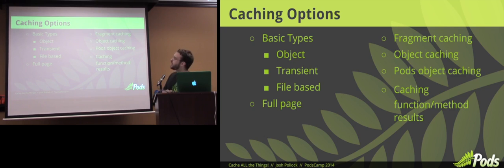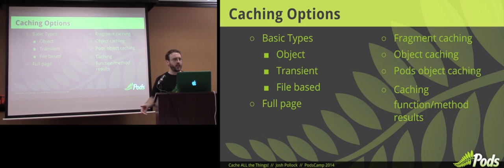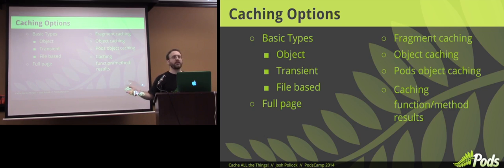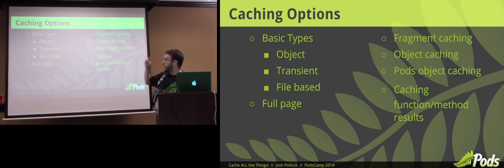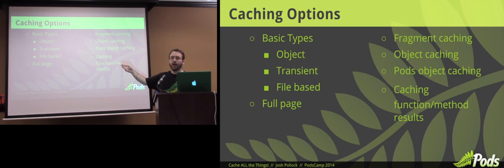Caching in general — in WordPress we have three types of caching: object caching, transient caching, and file-based. Those are your storage methods. Object is in the memory system, whereas transient stores to the database temporarily, and file-based is actually writing a file.